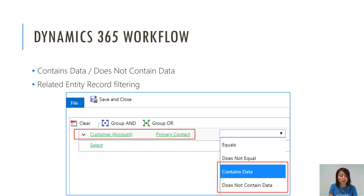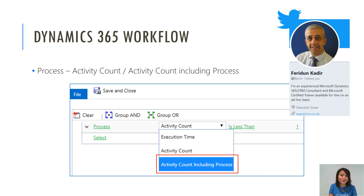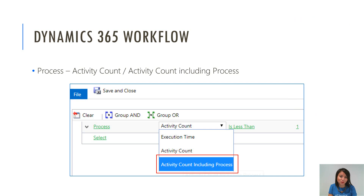I'm also going to show you how you can reference a field in a related entity record. The final item I will talk about is the activity count including processes. If this is something you're not familiar with in Dynamics 365 workflows today, I'm going to point you to another MVP in our community by the name Faridin — I'm so sorry if I pronounced your name wrong — and he explains the differences between the two. I'm covering activity count including processes because it doesn't make sense to me to exclude activities that weren't created by workflows.